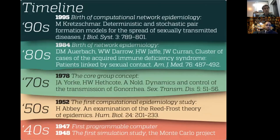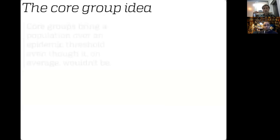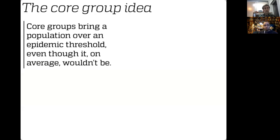In the 90s, we have pioneering work by Miriam Kretschmar, which was the first paper to use a network model to tune the network structure and observe the impact of this simulation. Now back to the core group idea. The core group was introduced to explain that a population can be under the epidemic threshold as a whole, and still a disease can survive. The disease in question was gonorrhea.